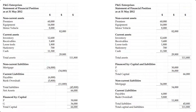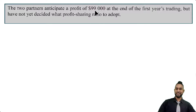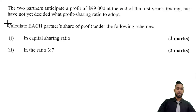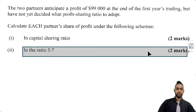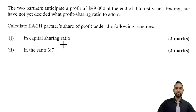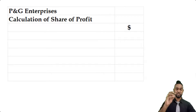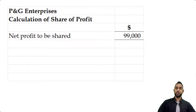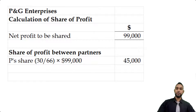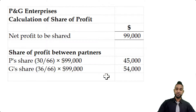Part B says the two partners anticipate a profit of 99,000 at the end of the first year's trading but have not yet decided what profit sharing ratio to adopt. Calculate each partner's share of profit under the following schemes. The capital sharing ratio means sharing in the ratio of their capital account balances. Their capitals total 66,000, with P contributing 30,000 and G contributing 36,000. P gets 30/66 × 99,000 = 45,000, and G gets 36/66 × 99,000 = 54,000. 45,000 plus 54,000 equals 99,000.